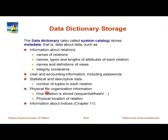Physical file organization information is very important: how is each relation stored — sequential, hash, or heap — and where is it physically. If data is stored as OS files, this is simply the names of the files containing that relation's data. If stored directly on disk, it includes the disk blocks storing data for that particular relation.